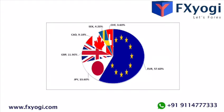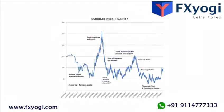Here's a trick question — if the index is made up of six currencies, how many countries are included? If you answered six, you're wrong. If you answered 24, you're a genius. The euro is the official currency of 19 of the 27 member states of the European Union. Add the other five countries — Japan, Great Britain, Canada, Sweden, and Switzerland — and their accompanying currencies, and you get 24.